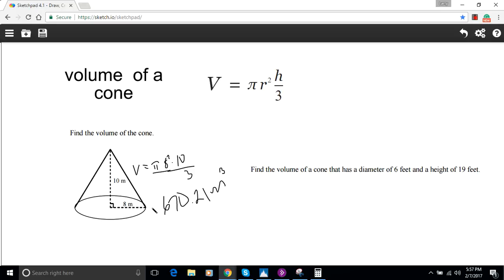Here we have another problem. The only thing that's different is it doesn't have a diagram. If it's easier to keep track, you can make your own diagram. This one has a diameter of 6 feet, so our diameter is 6, and the height is 19 feet.